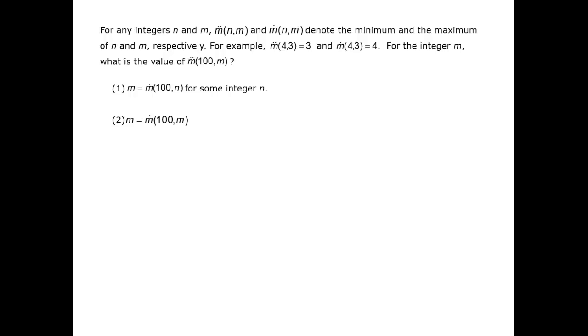We're going to need to find m2 dot of 100 and m, which will be the minimum between 100 and m. Statement 1 tells us that the larger of the two numbers, 100 and n, is m.